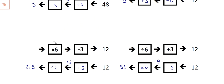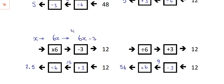The next one: I put x in, I times by six first this time. So what does it look like? x times six — but how do you write it? Six x. Now I'm going to do minus three. So this one is y equals six x minus three. So that's the function. I want you to do that for all the others as well.